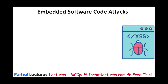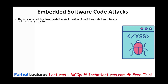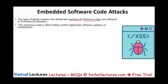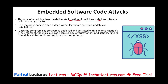One method is embedded software code attacks. When the company purchases software, attackers can embed malware inside it. This type of attack involves the deliberate insertion of malicious code into the software or firmware. The company purchases the software or firmware and is not aware of this malicious code — it's hidden within a legitimate software update or installation. So you infiltrate the software developer creating the software for them.